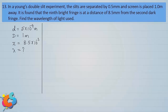Considering the screen, if this is the midpoint of the screen, D2 is the 2nd dark fringe and the 9th bright fringe is formed at some distance above it. The gap between the 2nd dark fringe and the 9th bright fringe is X. We first find this distance X and then substitute it into the required equation.